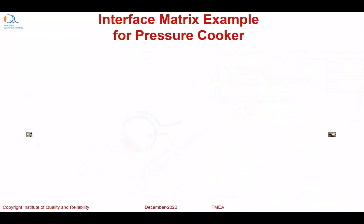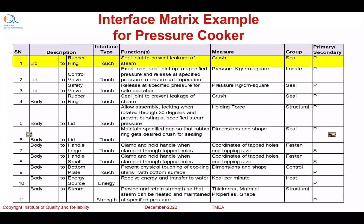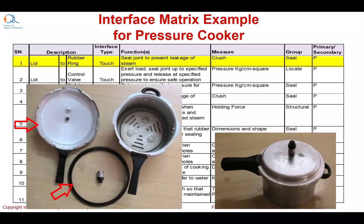Here is an example of an interface matrix for a pressure cooker. The first row shows the lid-to-rubber ring interface, which are touching each other, and the function is sealing the joint to prevent leakage of steam. The major parameter is the amount of crush of the rubber ring, the group is seal, and the function is primary.